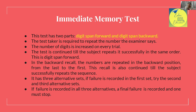The fifth sub-test is the Immediate Memory Test, which measures how much we can recall from memory. This test has two parts: Digit Span Forward and Digit Span Backward. In Digit Span Forward, the test taker is required to repeat the digits read aloud by the examiner in the same order, for example 1, 2, 3, 4, 5, 6, 7. The number of digits is increased on every trial, making it progressively harder.